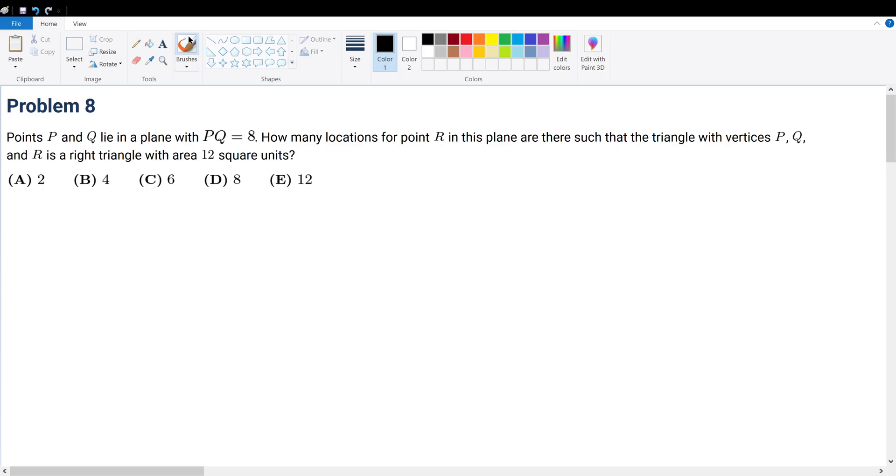Problem 8. Points P and Q lie in a plane with PQ equals 8. How many locations for point R in this plane are there such that the triangle with vertices P, Q, R forms a right triangle with an area of 12 square units?